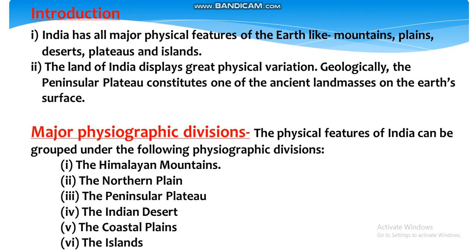India has all major physical features of the earth like mountains, plains, desert, plateaus and islands. Bhārath mein har prakār kī bhū-ākṛtiyāṃ pāī jātī hain, jaise parvat, maidān, marusthal, paṭhār, tathā dvīp samūh. The land of India displays great physical variation geologically. The peninsular plateau constitutes one of the ancient landmasses on the earth's surface. Bhārath kī bhūmi bahut adhik bhoutic vividhitāoṃ ko darshātī hai; bhūgarbhīya taur par prāydvīp yah paṭhār pṛthvī kī satah kā prācīnatam bhāg hai.